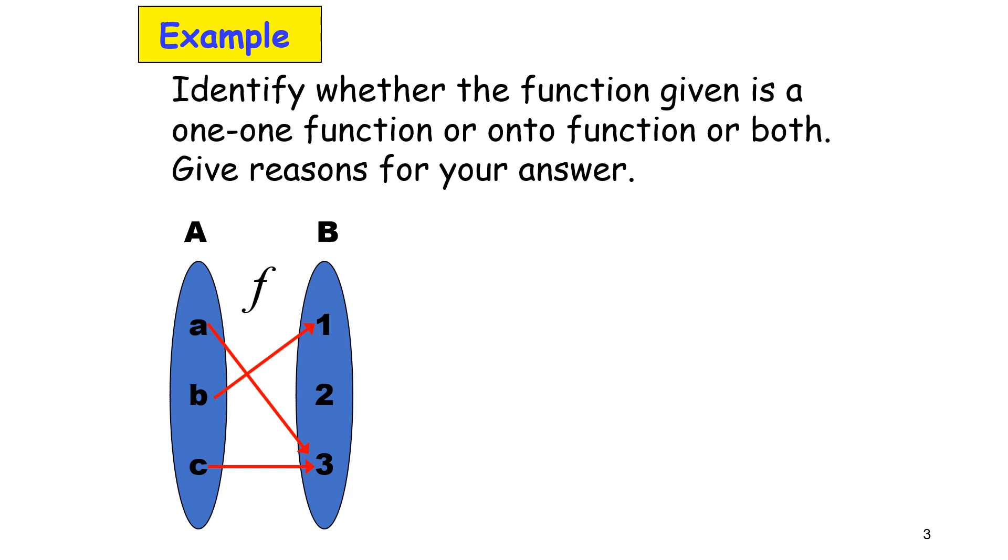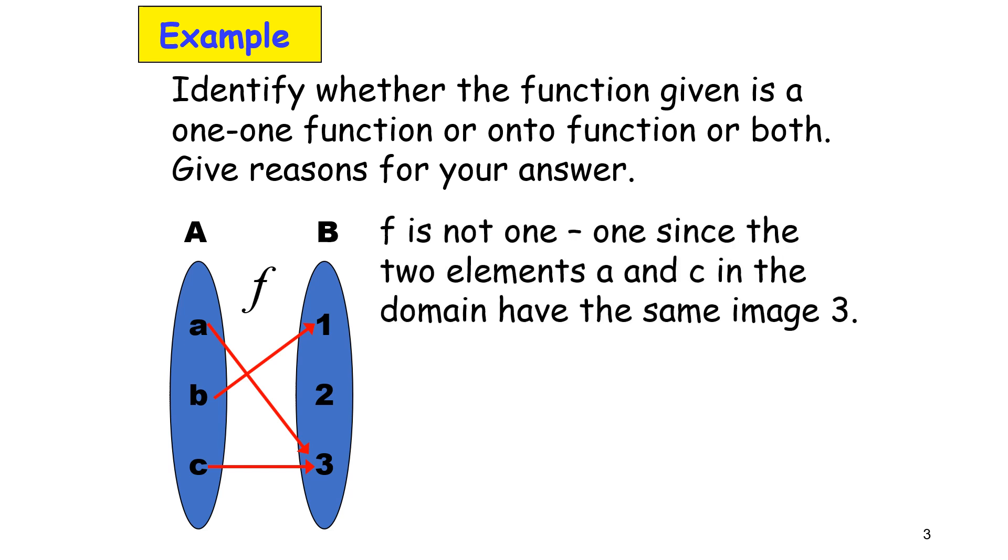b mapped to 1 and there is no mapping to 2. Therefore, f is not one-to-one since the two elements a and c in the domain have the same image of 3.